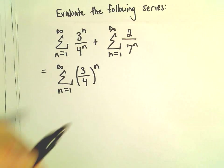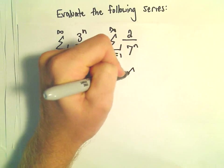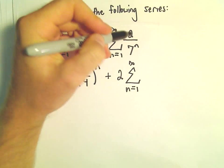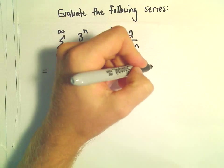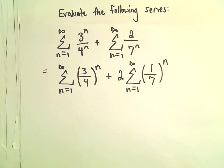Constants you can factor outside of the summation. So the 2, I'm just going to pull that out front and then we'll have n equals 1 to infinity. We would have a 1 left in the numerator and I'm going to write this as 1 over 7 all raised to the n power.